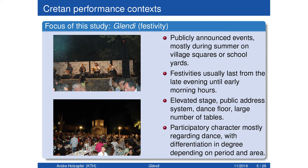So it's publicly announced events, mostly happening during the summer, in village squares or schoolyards. Many people taking part in that, small villages very often organizing events for people like 1,000 visitors, dancers, coming to these festivities. These festivities usually last from the late evening until the morning hours, and you have an elevated stage as you probably can see here. There's an elevated stage here with the PA system. And there's, in this performance context, a participatory character, mostly regarding the dance, with differentiation in the degree depending on period and area. But there's always a large, well, between the tables where all these people are seated and the stage, there's usually a very large dance floor.